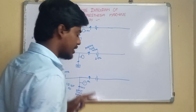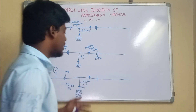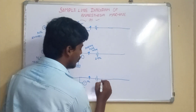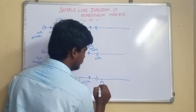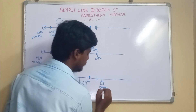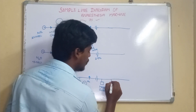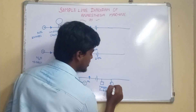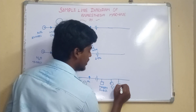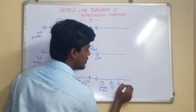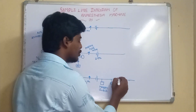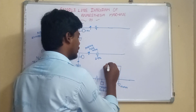After the second-stage pressure regulator, the oxygen line has some specific special connections. One is the master switch, another is the oxygen flush, and another is the oxygen failure safety alarm. This oxygen failure safety alarm is also connected with the other two gases — air and nitrous oxide.